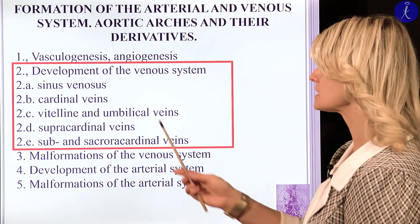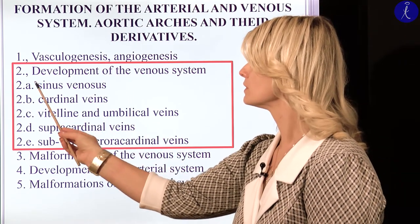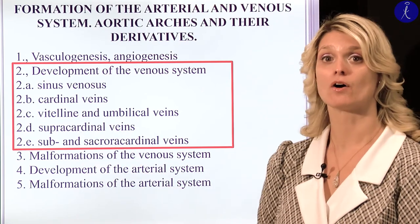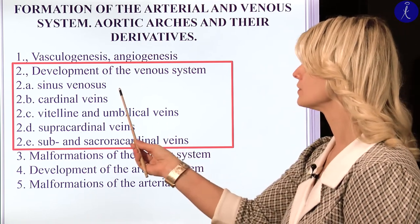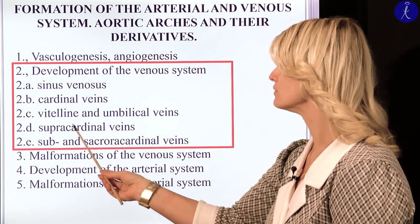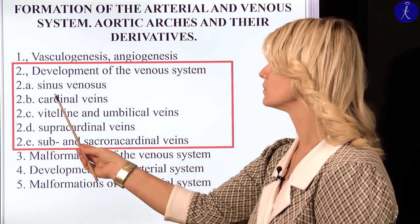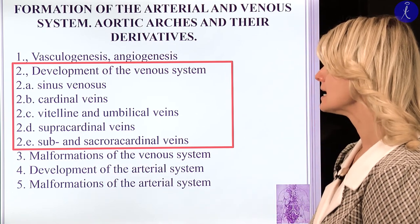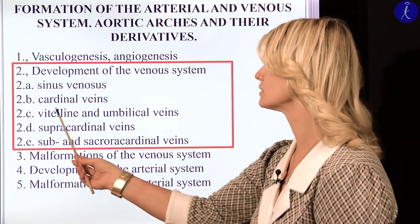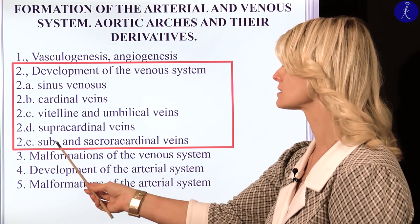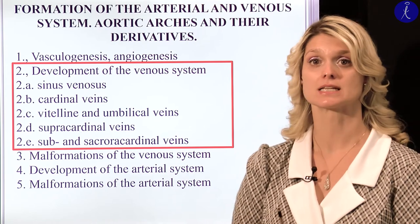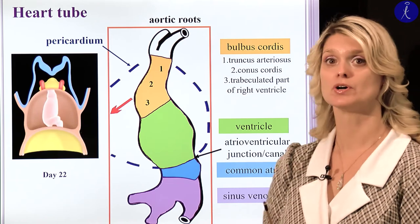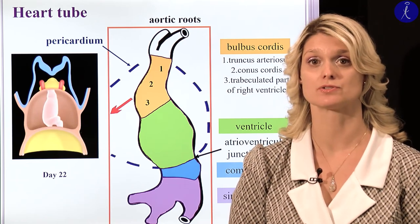Let's see now the development of the veins, the venous system. First, I would like to repeat with you the development of the sinus venosus, which is the proximal part of the primitive heart tube. After, we will see the main veins of the embryo: the development of the cardinal veins, the vitelline and umbilical veins. And finally, we will talk about the supracardinal, sub-, and sacrocardinal venous systems.